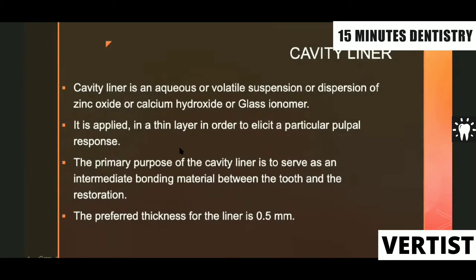Simply put, a cavity liner is like a varnish in which zinc oxide, calcium hydroxide, or glass ionomer particles are dispersed as a medicament. When applied in a thin layer, it coats the exposed dentine. The primary purpose is to serve as an intermediate bonding material between the tooth and the restoration. The preferred thickness for a liner is 0.5 mm.